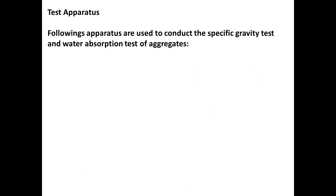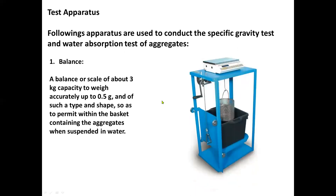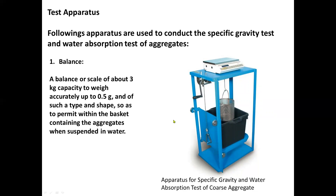For the test apparatus, the following apparatus are used to conduct the specific gravity and water absorption tests of aggregates. First, we have the balance — a balance or scale of about 3-kilogram capacity, accurate to 0.5 grams, of such a type and shape so as to permit weighing the basket containing the aggregates when suspended in water. This is the balance at the top of the testing apparatus.